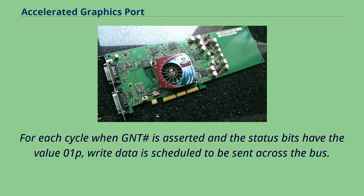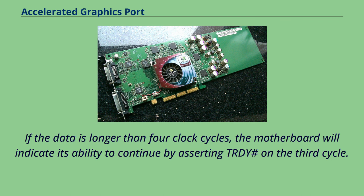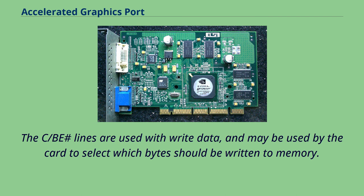For each cycle when GNT# is asserted and the status bits have the value 01P, write data is scheduled to be sent across the bus. At the next available opportunity, the card will assert IRDY# and begin transferring the data portion of the oldest request in the indicated write queue. If the data is longer than four clock cycles, the motherboard will indicate its ability to continue by asserting TRDY# on the third cycle. Unlike reads, there is no provision for the card to delay the write — if it didn't have the data ready to send, it shouldn't have queued the request. The CB# lines are used with write data, and may be used by the card to select which bytes should be written to memory.